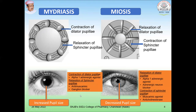Certain drugs are responsible for miosis as well as mydriasis. Contraction of the dilator pupillae is caused by alpha-1 adrenergic agonist drugs. Relaxation of the sphincter pupillae is caused by anti-muscarinic or ganglionic blockers. In miosis, relaxation of the dilator pupillae is caused by alpha-1 adrenergic antagonists and adrenergic neuron blockers, whereas constriction of the sphincter pupillae is caused by muscarinic agonists and anti-cholinesterase agents. If you have an unknown drug with such potential, you can test it on the rabbit eye.